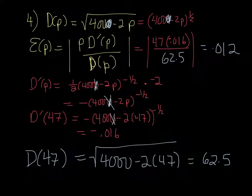So we just need to figure this all out. We have 47 times -0.016 divided by 62.5. And take the absolute value of that. We get 0.012. Except that I just made a little error with this. My apologies. It should be 400, not 4,000.